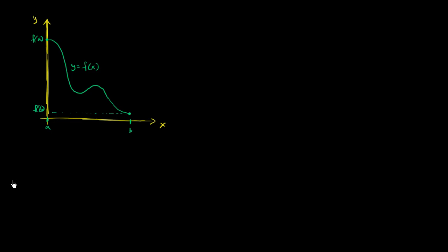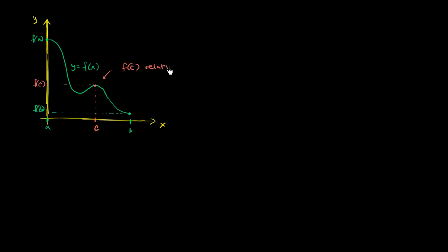It looks like a is equal to 0. But you're probably thinking, hey, there are other kind of interesting points right over here. This point right over here isn't the largest — it is definitely not the largest value that the function takes on over that interval. But relative to the other values around it, it seems like a little bit of a hill. It's larger than the other ones. Locally, it looks like a little bit of a maximum. So that's why this value right over here — let's call this c — so this is f of c. We would call f of c a relative maximum value.